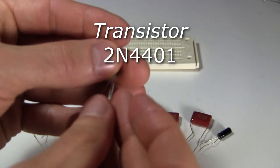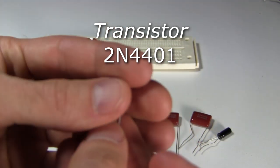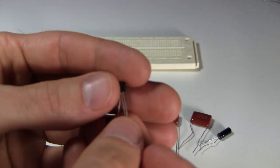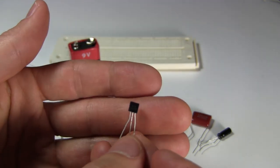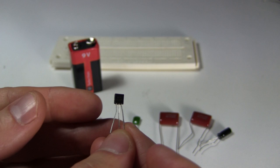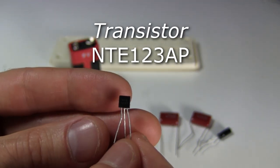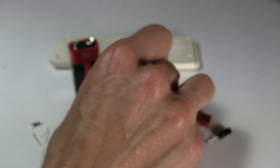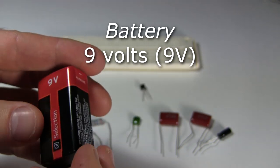You'll also need a 2N4401 transistor, or an equivalent part. In my case, my local electronics store has NTE parts, and their catalog said the NTE-123-AP was equivalent. So that's what I have. You'll also need a 9V battery.